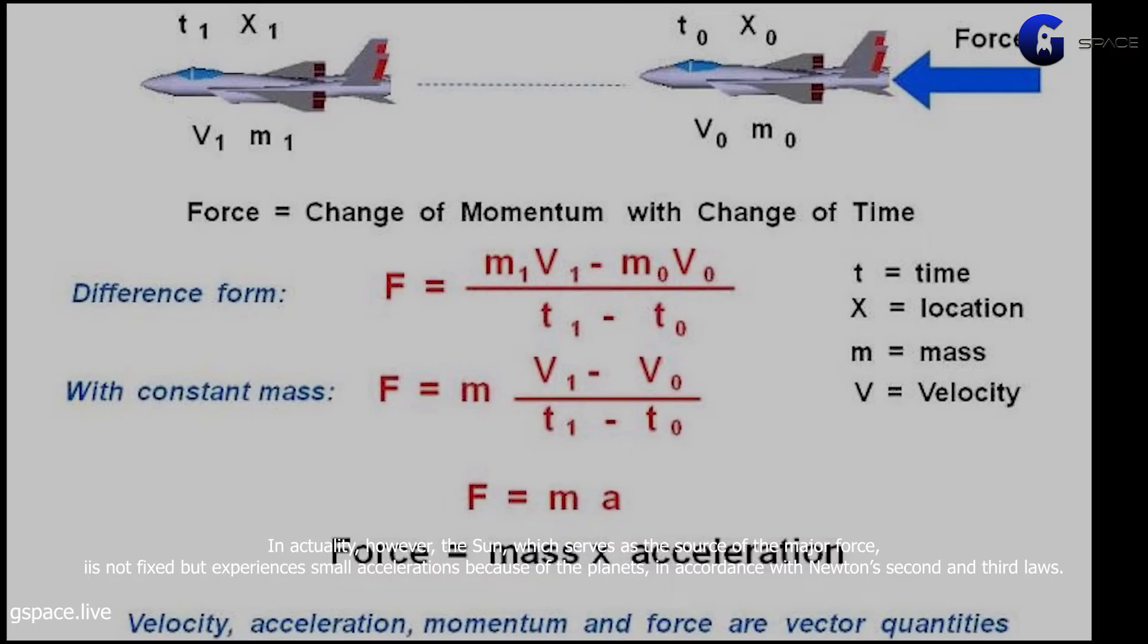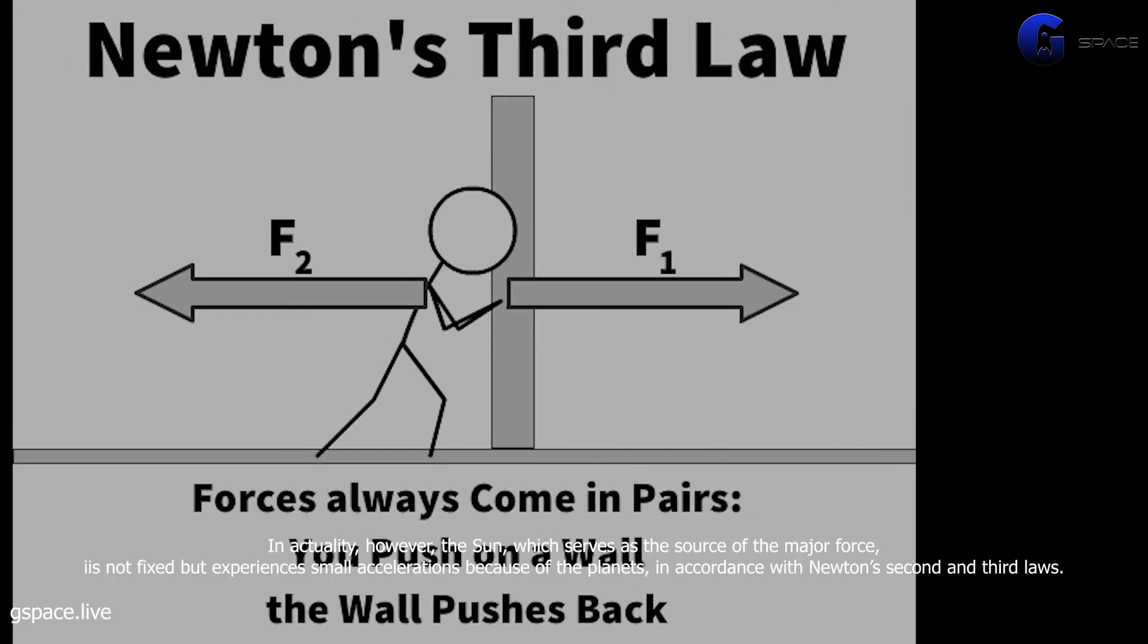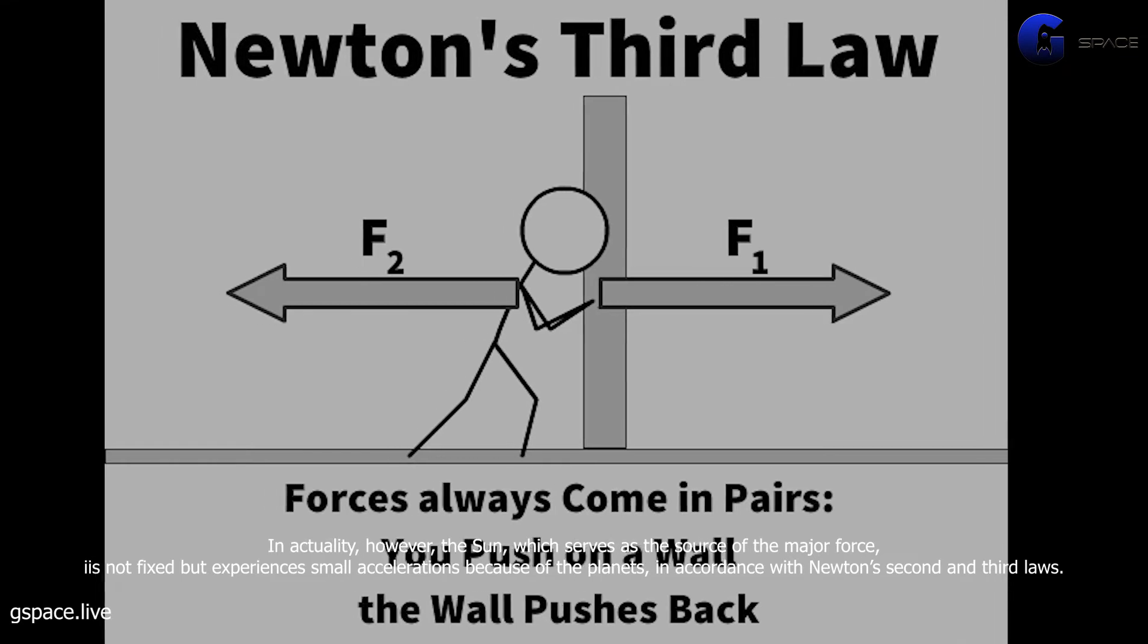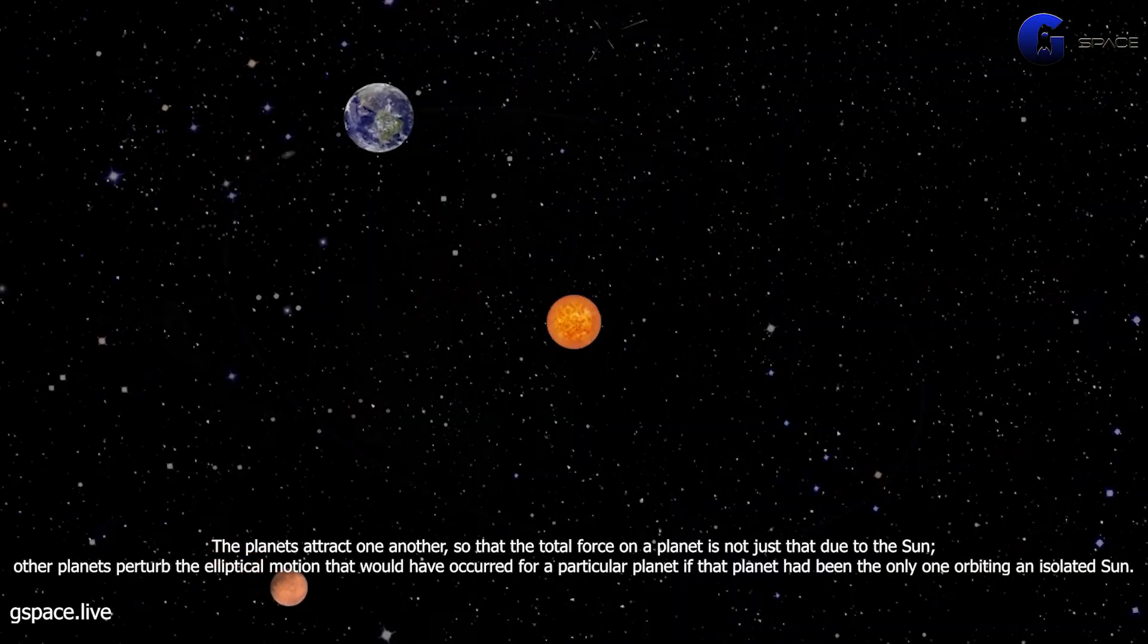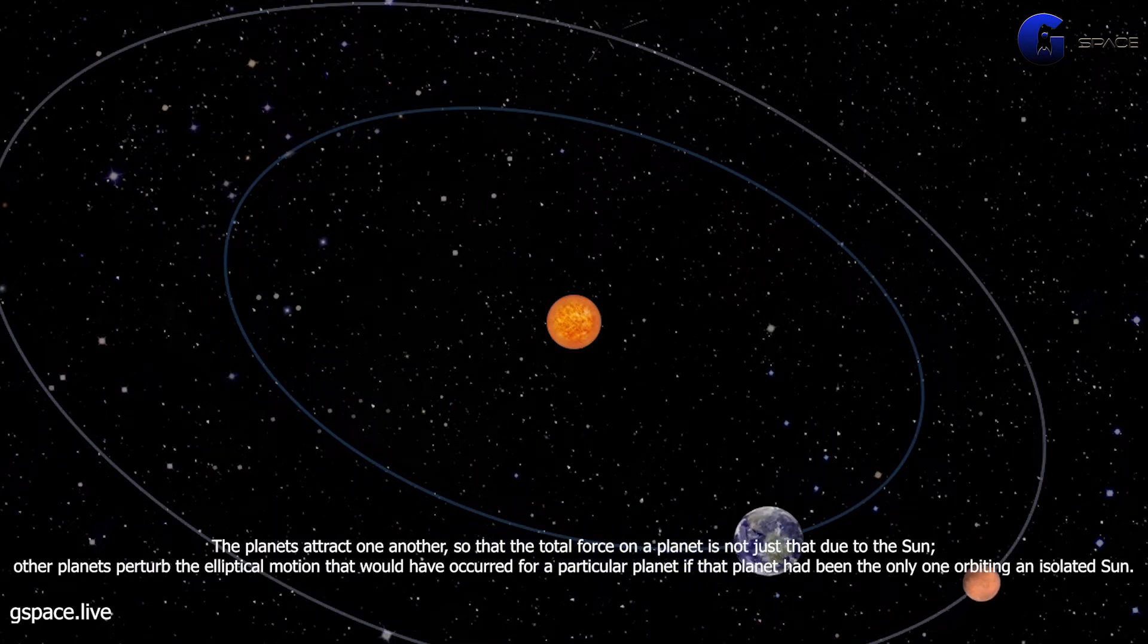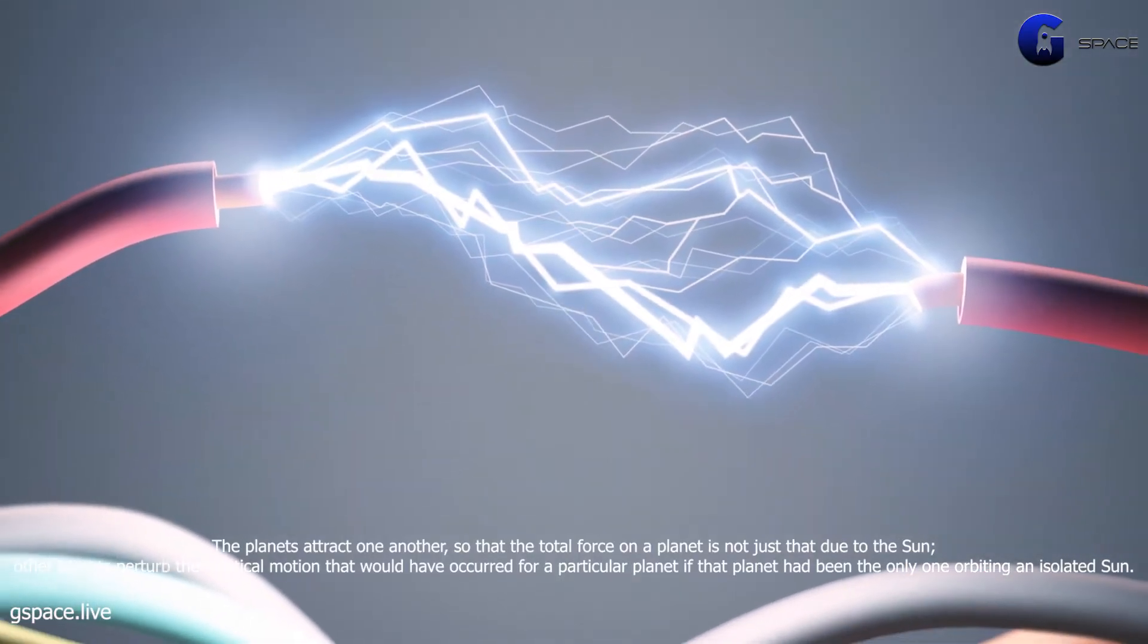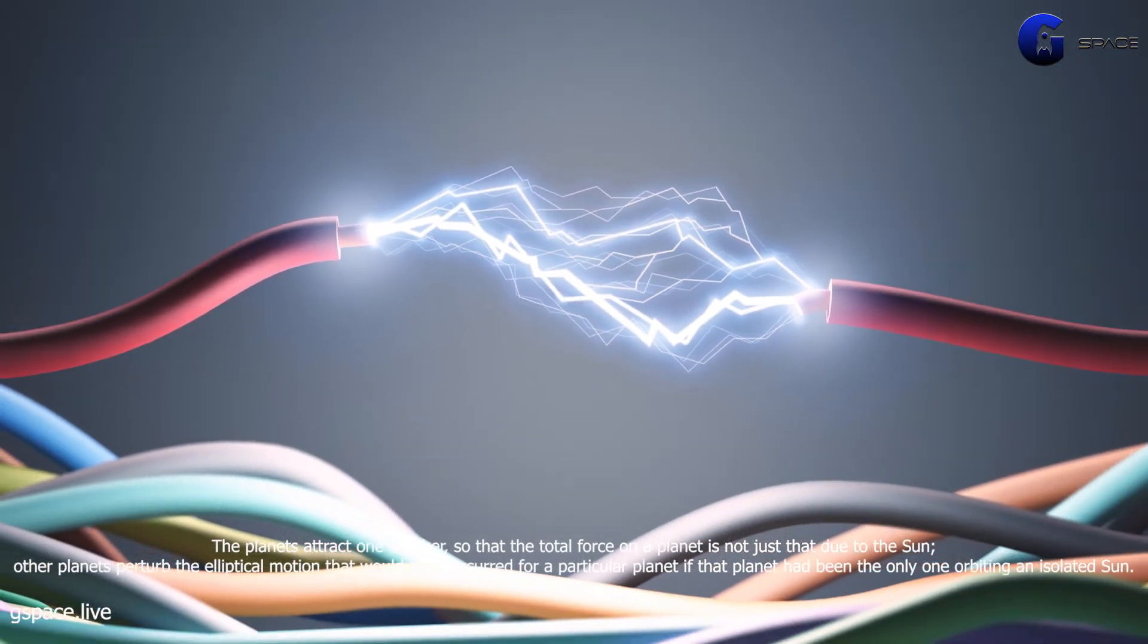In actuality, however, the sun, which serves as the source of the major force, is not fixed but experiences small accelerations because of the planets in accordance with Newton's second and third laws. The planets attract one another, so that the total force on a planet is not just that due to the sun. Other planets perturb the elliptical motion that would have occurred for a particular planet if that planet had been the only one orbiting an isolated sun.